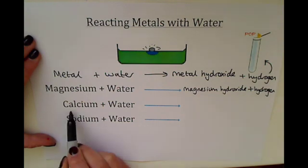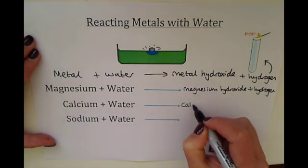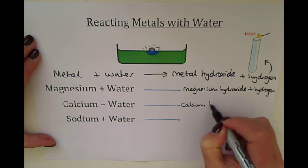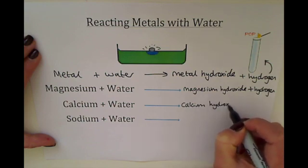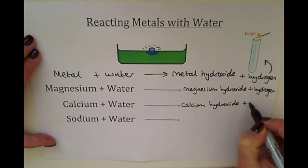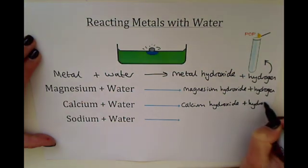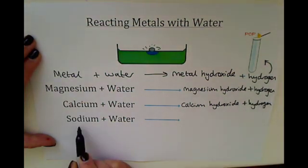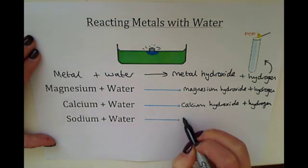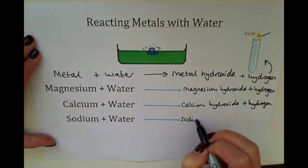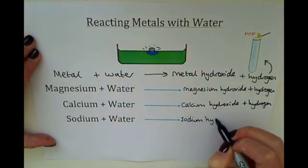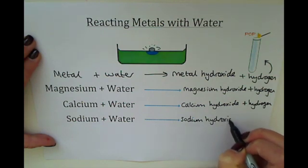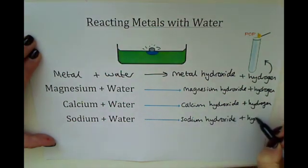So you've got calcium and water, which will make calcium hydroxide plus hydrogen. And you've got sodium plus water, which would make sodium hydroxide plus hydrogen.